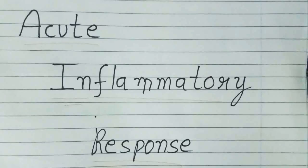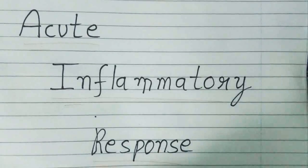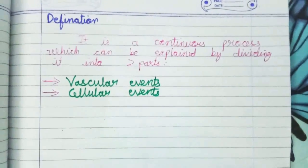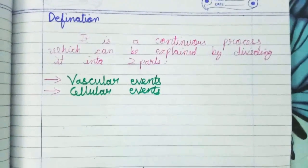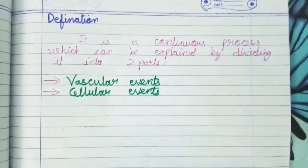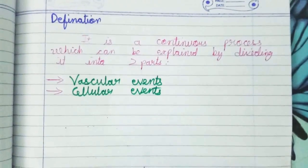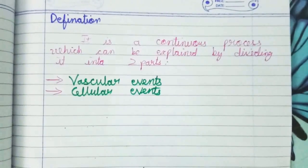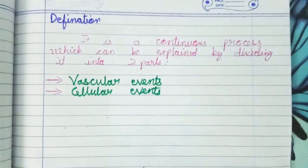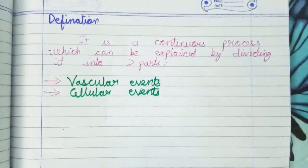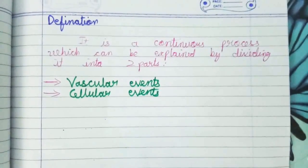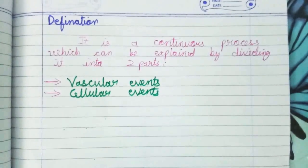Today's topic is acute inflammatory response. The meaning of inflammation first: it is a defense reaction — a body's defense reaction in order to eliminate the injurious or external agent. There are two types of inflammation: chronic and acute.